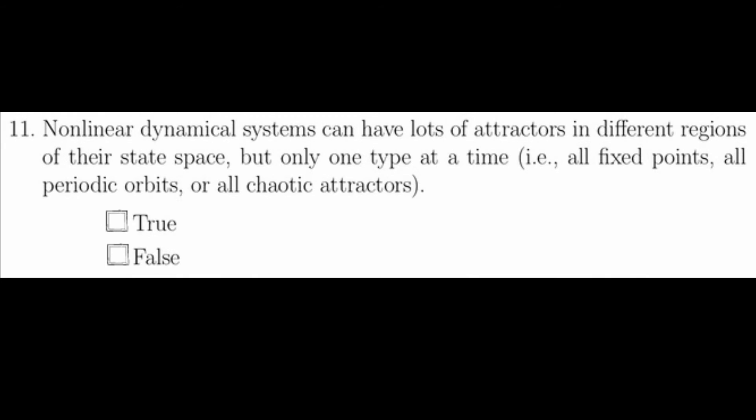Question eleven says that nonlinear dynamical systems can have lots of attractors in different regions of their state space, but only one type at a time. So, for example, all the attractors for a particular parameter set were fixed points or periodic orbits or chaotic attractors. This is not the case. This question is false. In fact, nonlinear dynamical systems can have an arbitrary number of all types all over the state space, and there's no way to know a priori how many or what types or what they are. This is one of the things that makes studying nonlinear dynamical systems so interesting and rich.